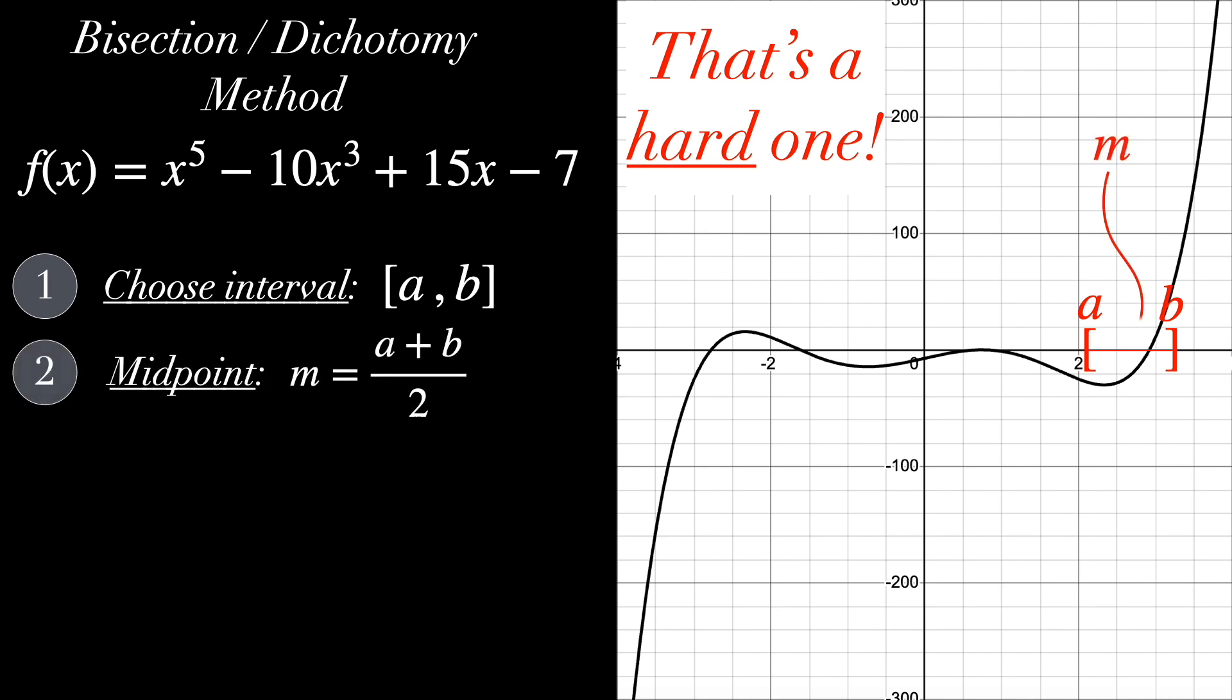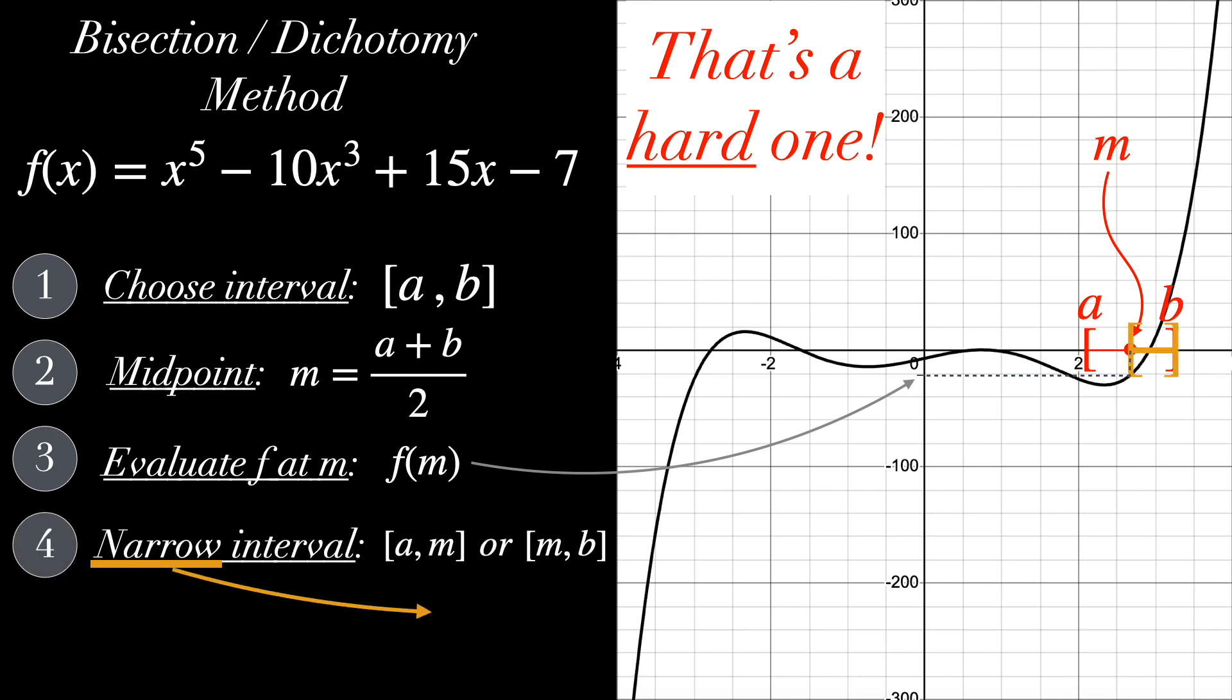Second, calculate its midpoint, a plus b over 2. Third step, you need to evaluate the function at the midpoint, f of m. Then you narrow the interval. If f of a and f of m have opposite signs, you set b equals to m. Otherwise, if f of m and f of b have opposite signs, you set a equals m. So it depends where your midpoint falls in this interval, and that's the way you're going to narrow it.